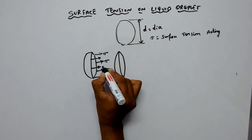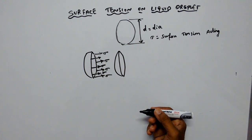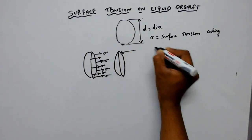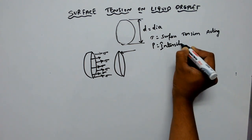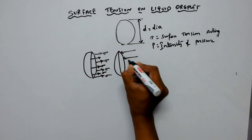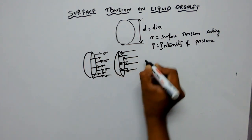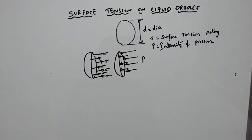The surface tension acts towards the liquid molecules because of the cohesive forces. Now let us consider P be the intensity of pressure. The direction of pressure is like this. If you cut the spherical droplet into two equal halves, surface tension and pressure forces are developed like this.